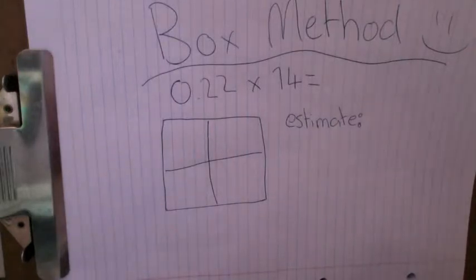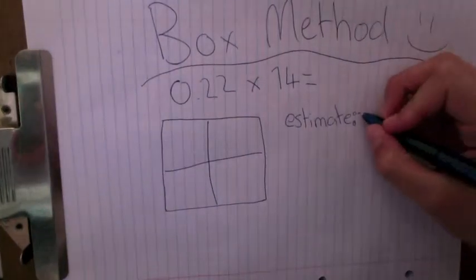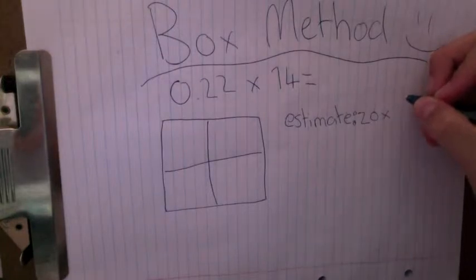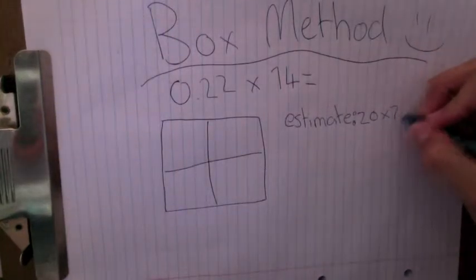So we're going to round 0.22 to 20, and then we need to round 74 and we're going to round that to 70.